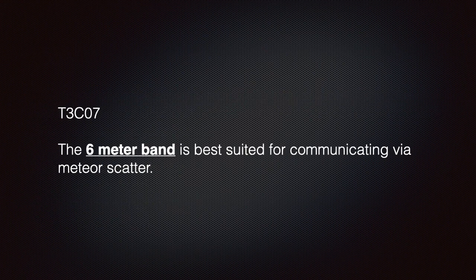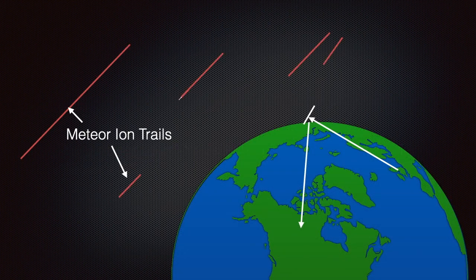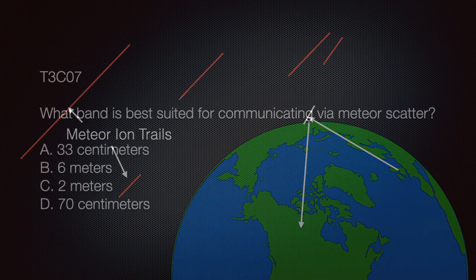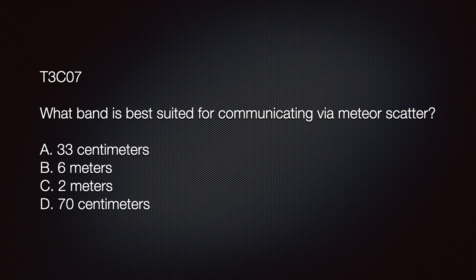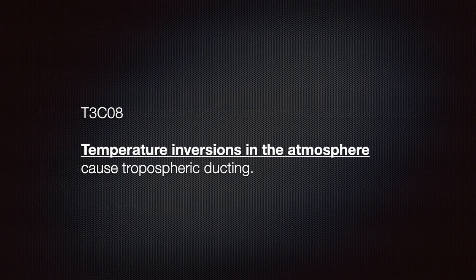For the exam you should know the 6-meter band is best suited for communicating via meteor scatter. Scientists estimate that some 48-plus tons of meteoric material fall on the Earth each day. As a meteor passes through our atmosphere it creates an ion trail, and the ion trails left behind can be exploited for radio communications in the 6-meter band. The correct answer is B — 6 meters.